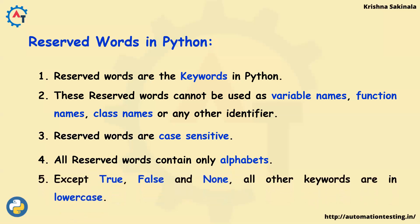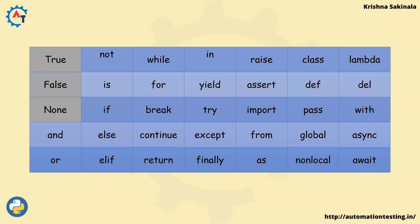Except for True, False, and None, all other keywords are in lowercase. Only these three are CamelCase. So most reserved words are lowercase only, with True, False, and None as exceptions.